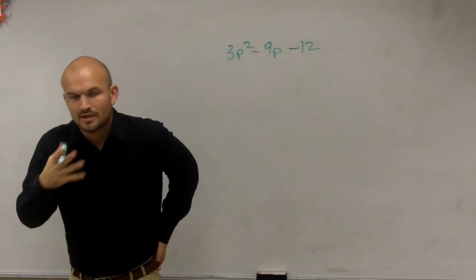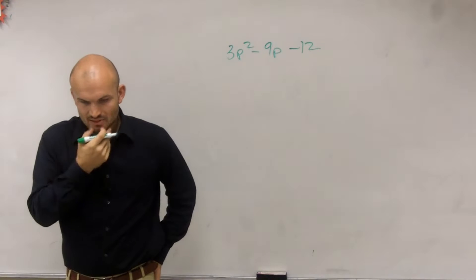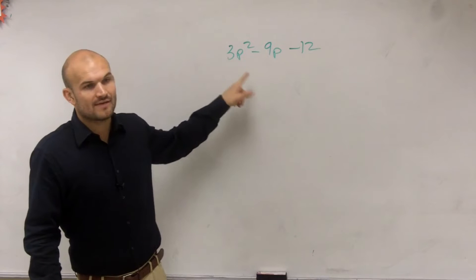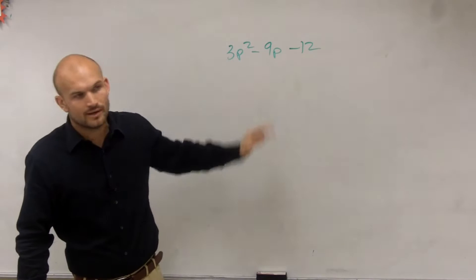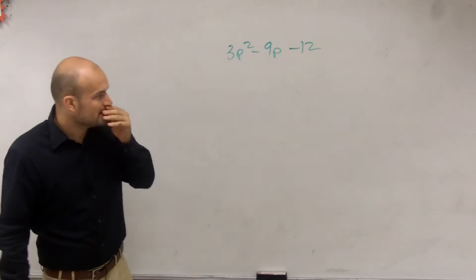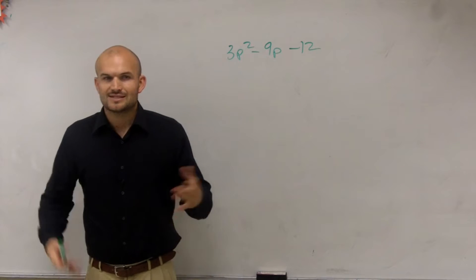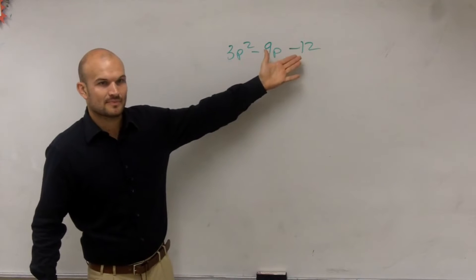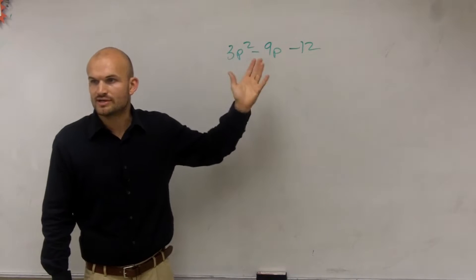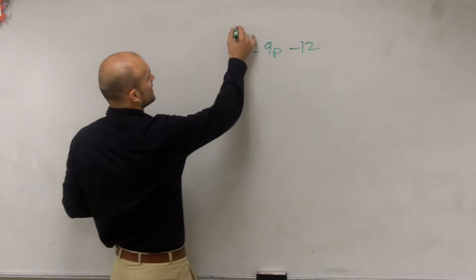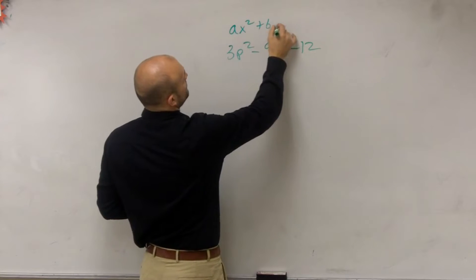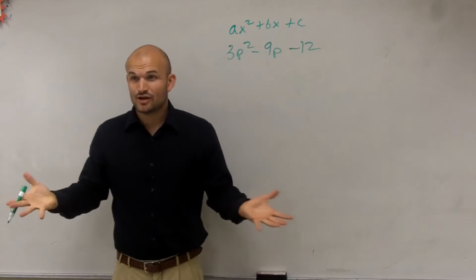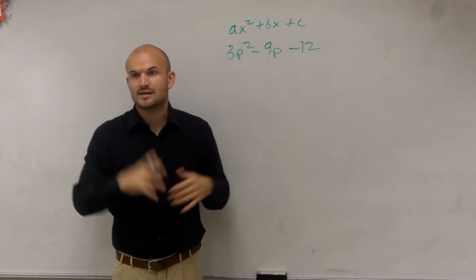To do a problem like this, the first thing we always want to do is write this as a product of your factors. We're going to learn how to do this when we have A greater than 1. The way to simplify this is to always look to factor out numbers. Remember we write this as AX² + BX + C, where A, B, and C are your real numbers. Is there a real number they all share? Yes, a 3.